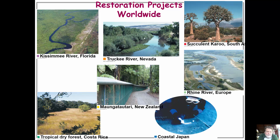Some restoration projects worth being aware of: the Kissimmee River in Florida, which was channelized and is being restored back to its channel; the Rhine River in Europe; and the Truckee River in Nevada — all similar examples of river restoration.